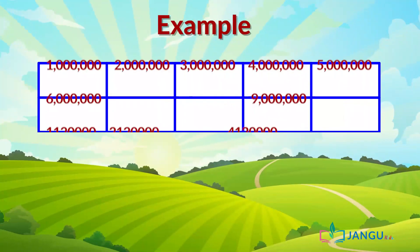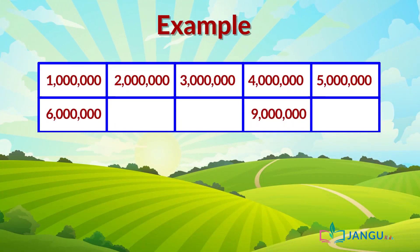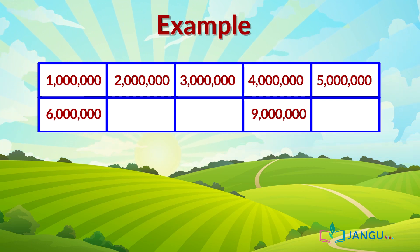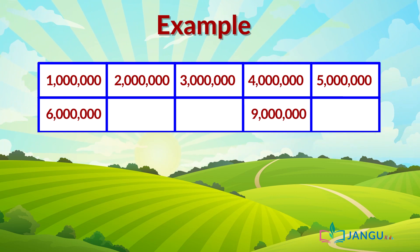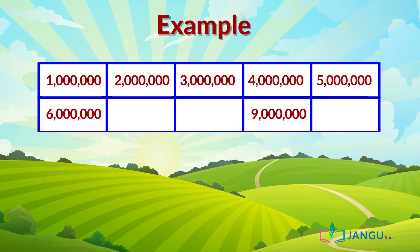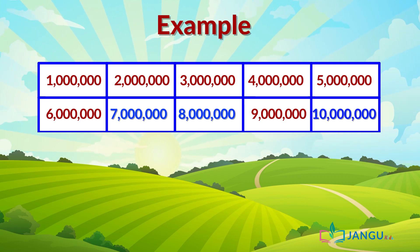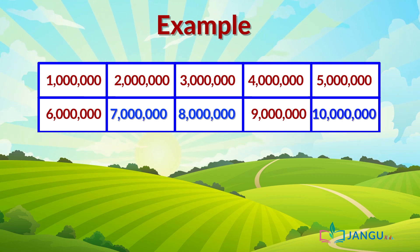Now let's also take a look at this example: counting by millions to fill in the blanks in the table. To fill the table up, we need to add 1 million to the previous number in the sequence. Now, is that understood?